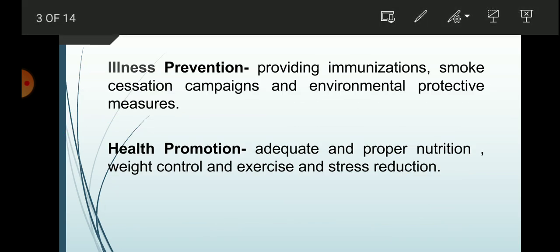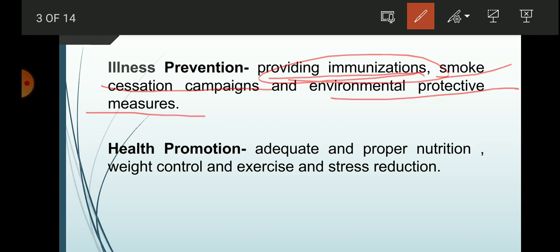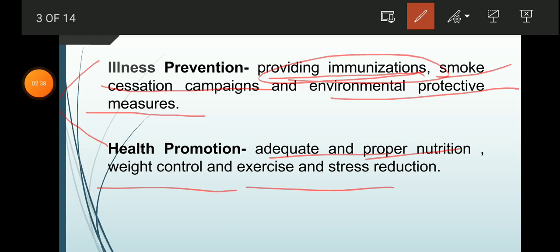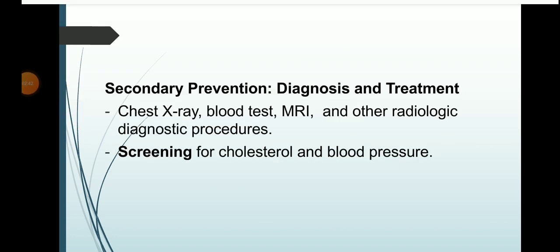Let's dig deeper into illness prevention versus health promotion. Illness prevention is the process wherein we provide immunizations like BCG, Bacillus Calmette-Guérin, Hepatitis B, Vitamin K — immunizations received when we are neonates. Smoke cessation campaigns and environmental protective measures are also part of illness prevention. Health promotion, on the other hand, emphasizes adequate and proper nutrition, weight control, exercise, and stress reduction.